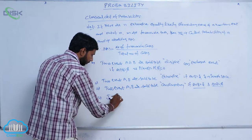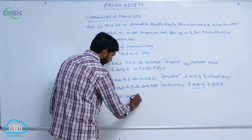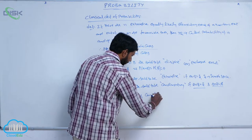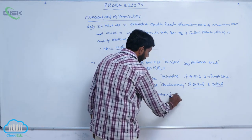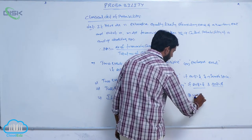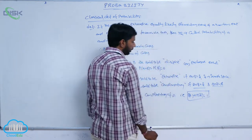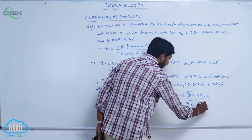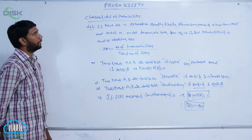If P of A bar represents the complementary of A, then P of A plus P of A bar is equal to 1, and P of A bar is equal to 1 minus P of A.